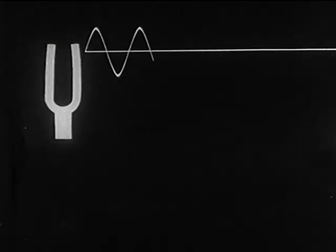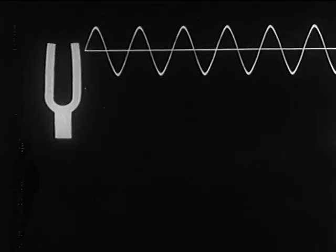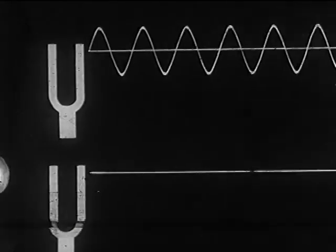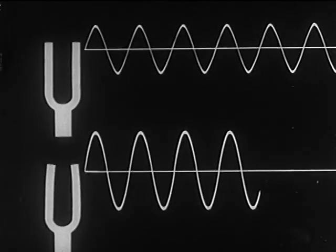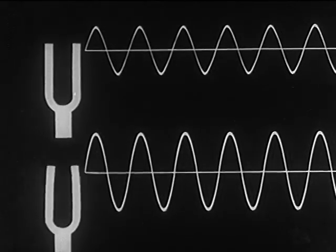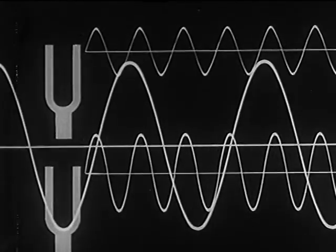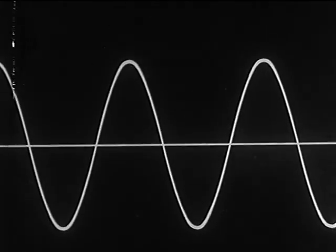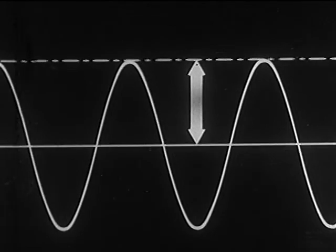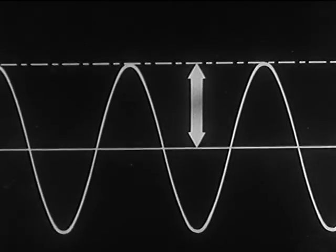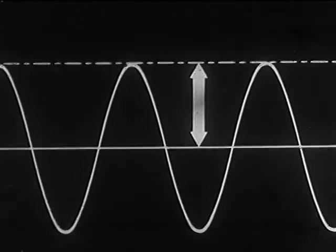We begin with loudness. Every sound sets up a disturbance in the transmitting medium. The larger the disturbance or displacement of the individual particles, the greater is the height of its graph above the neutral line. This displacement above the neutral line is called amplitude. And it is amplitude that determines loudness. As the amplitude increases, its loudness increases.